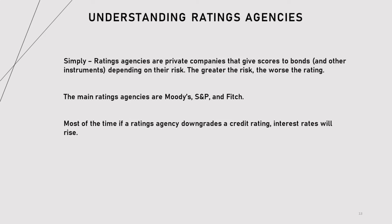Understanding ratings agencies. Simply, ratings agencies are private companies that give scores to bonds and other instruments depending upon their risk — the greater the risk, the worse the rating. The main ratings agencies are Moody's, S&P, and Fitch. Most of the time, if a ratings agency downgrades a credit rating, interest rates will rise. Keep in mind, ratings agencies have received criticism because they are typically for-profit companies. Bond issuers pay them to rate their bonds, and some ratings agencies are even publicly traded, meaning they have to keep their public image positive and their shareholders happy.